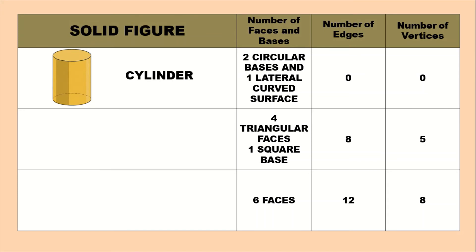We have the cylinder. A cylinder has two circular bases — top and bottom — and one lateral curved surface. It has no edges because it is in a circle form and will not form an edge. The number of vertices is also zero, because it has no edges and no points.